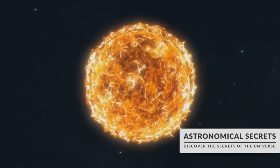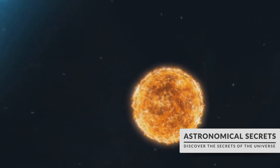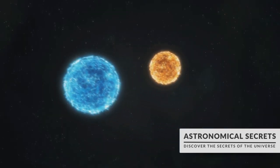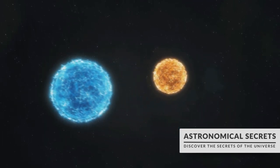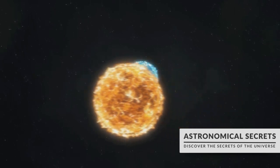These white dwarfs are incredibly dense. Imagine trying to stuff the mass of our sun, a gigantic ball of gas that's about 1 million miles in diameter, into an object the size of the earth. That's how dense these white dwarfs are.